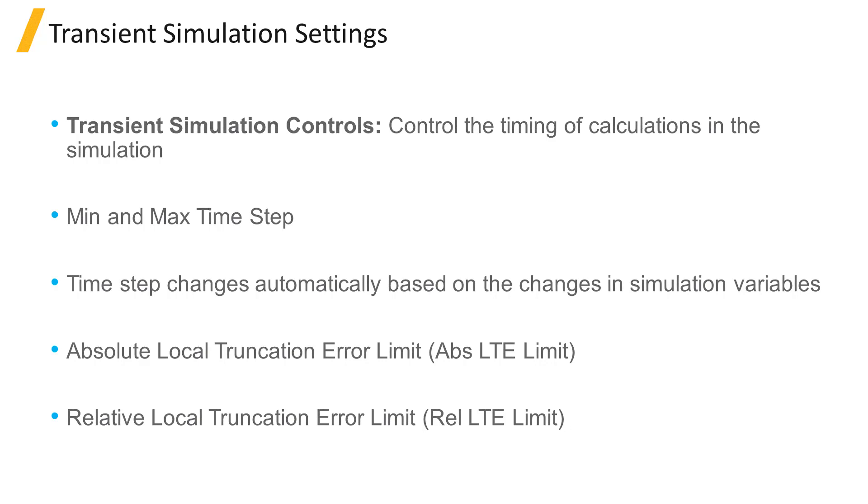Using larger values for transient simulation controls will make simulation faster at the expense of less accuracy. Larger values will also increase the chance of divergence issues.